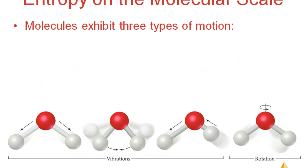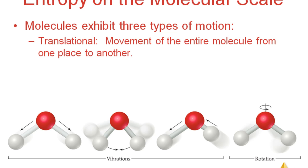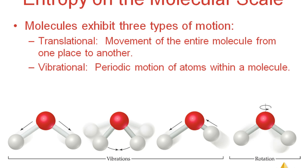There are three main types of molecular motion. The first is translational motion — movement of the entire molecule from one place to another. In cold water, molecules have less kinetic energy so they don't move much; in warm water, molecules possess more kinetic energy and move from one place to another. The second type is vibrational motion — the periodic motion of atoms within a molecule. For example, in a water molecule, both hydrogen atoms can stretch toward and away from the oxygen, or one can move closer while the other moves away.